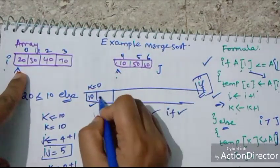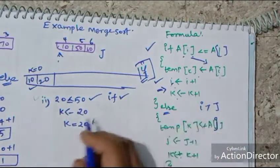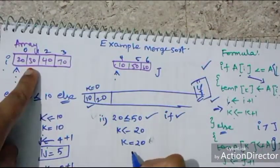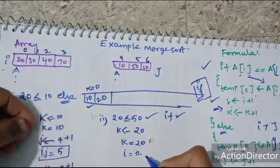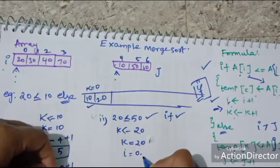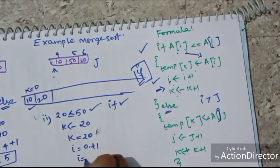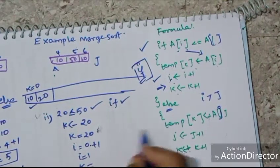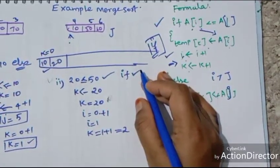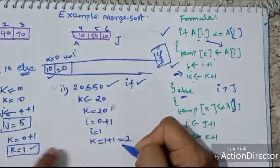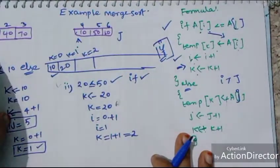K equals 20, so we directly fill 20 into the second array position. The I value starts from 0. We perform I equals I plus 1, that is 0 plus 1, so I equals 1. K was 1, and now K equals 1 plus 1 equals 2. The 20 is filled at index 2.